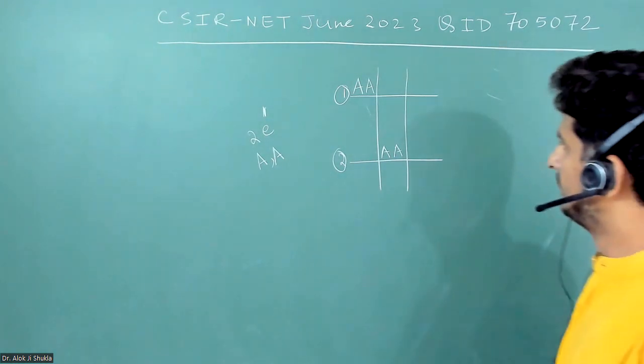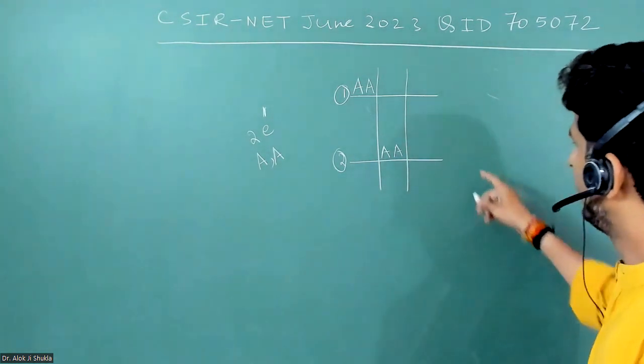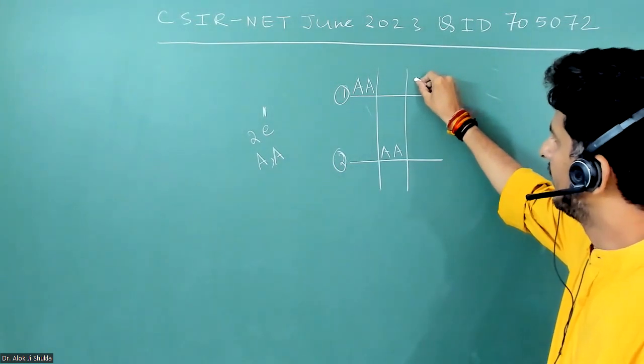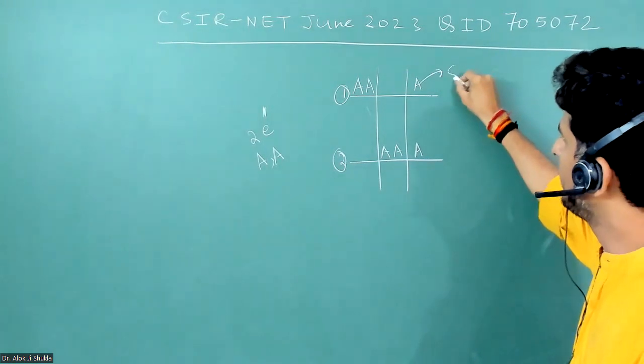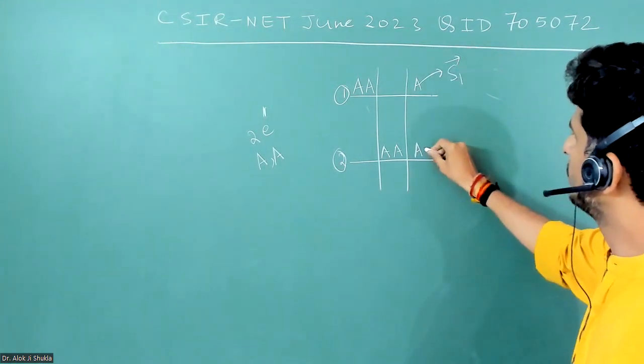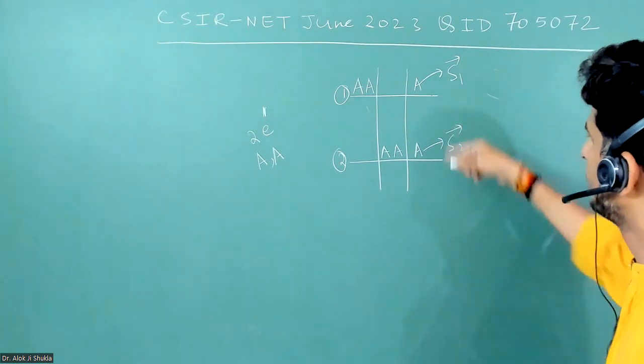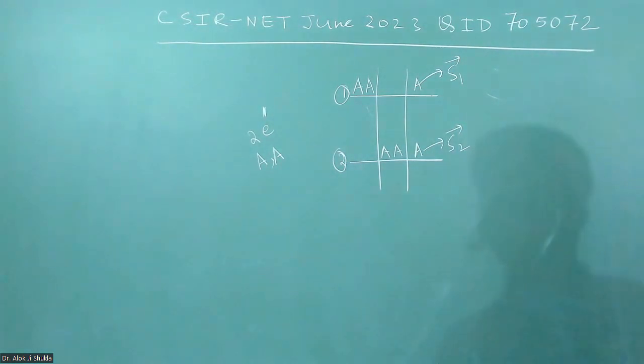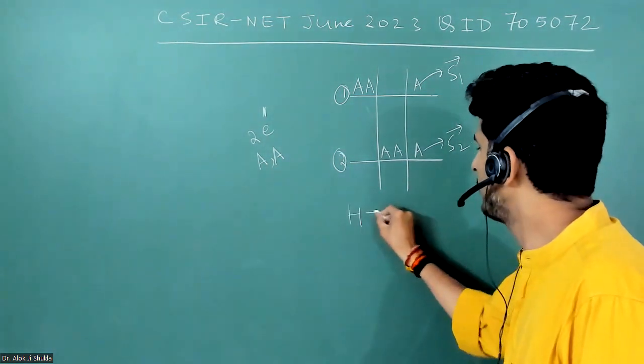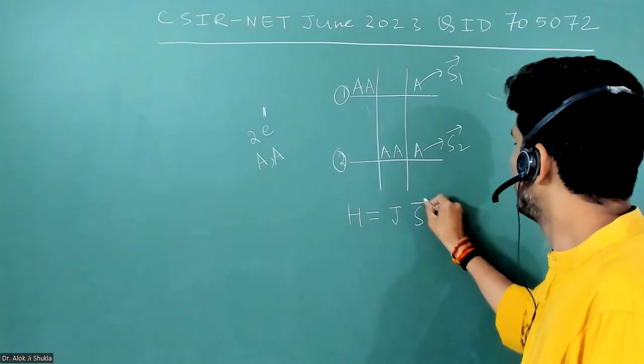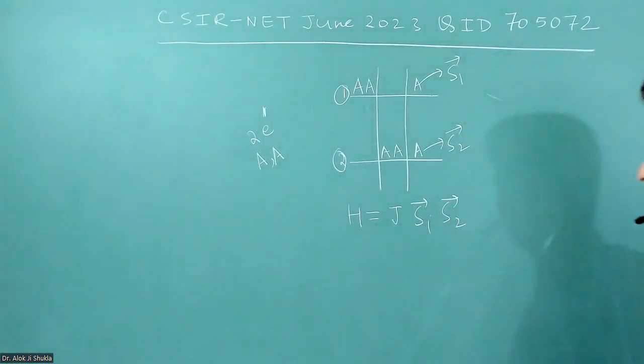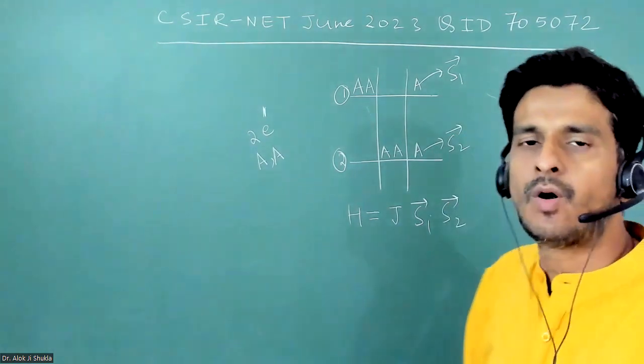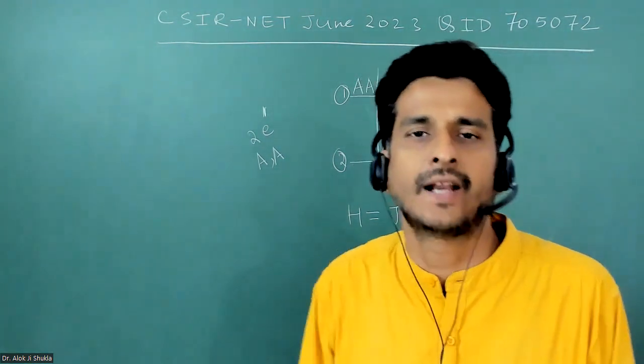When one electron is here and another electron is here, there is spin given which is associated with these two electrons, S1 and S2. There is an interaction Hamiltonian that is given, that is equal to J S1 dot S2. That means there is some interaction energy. Now the question is, in what ways will these interactions happen?